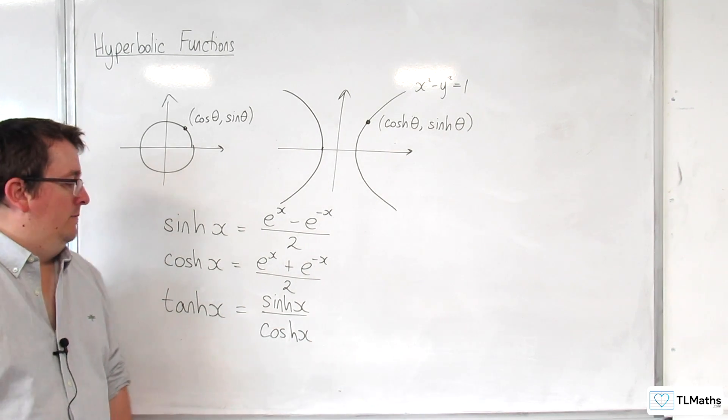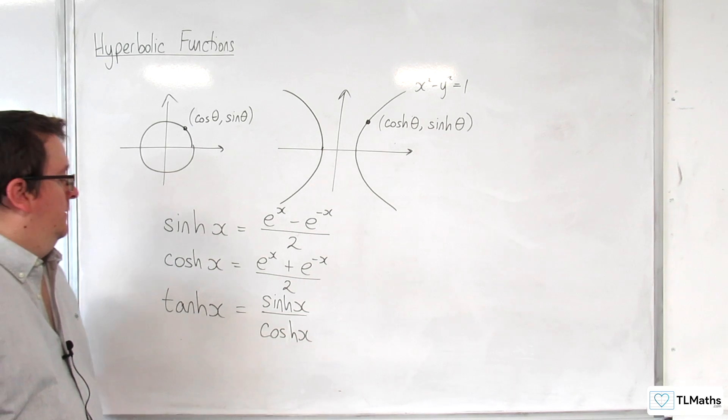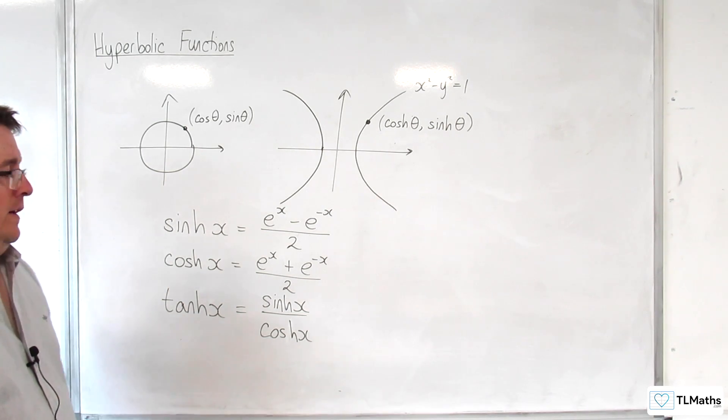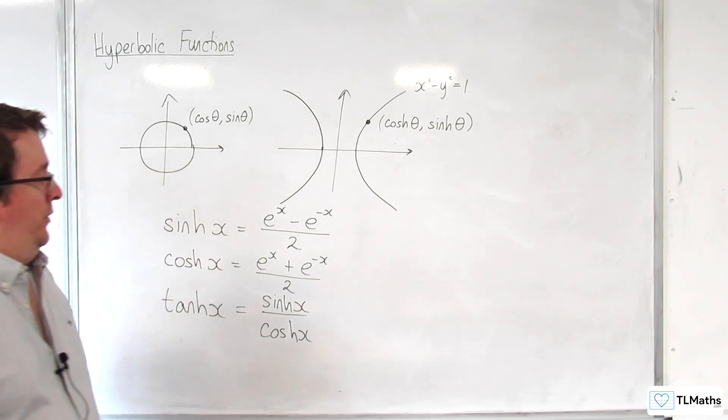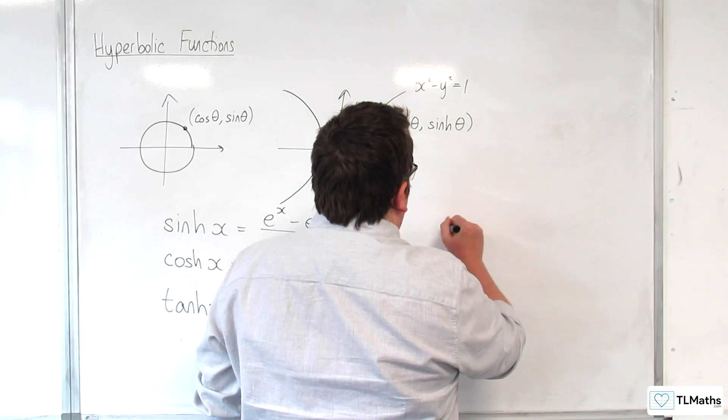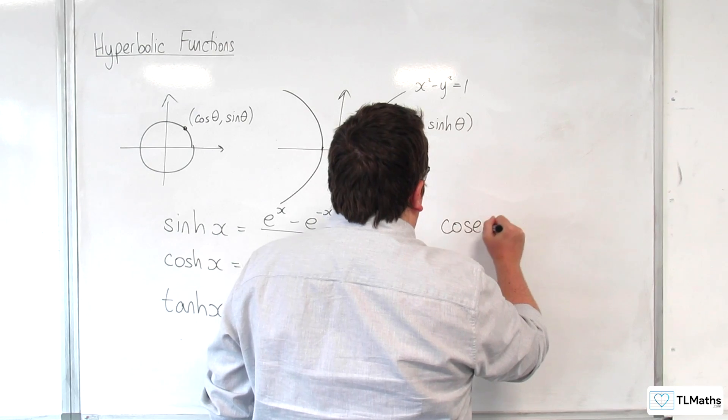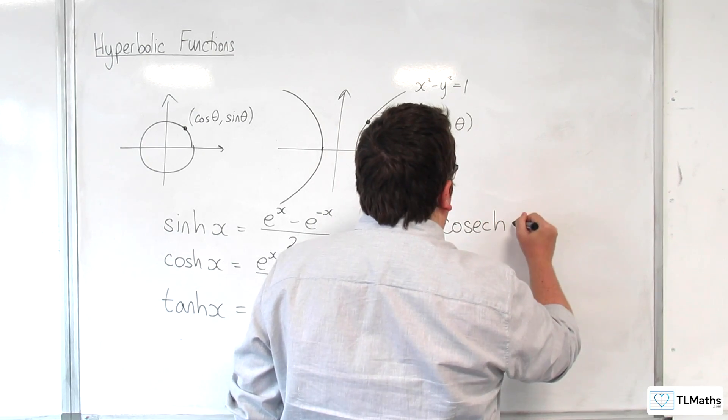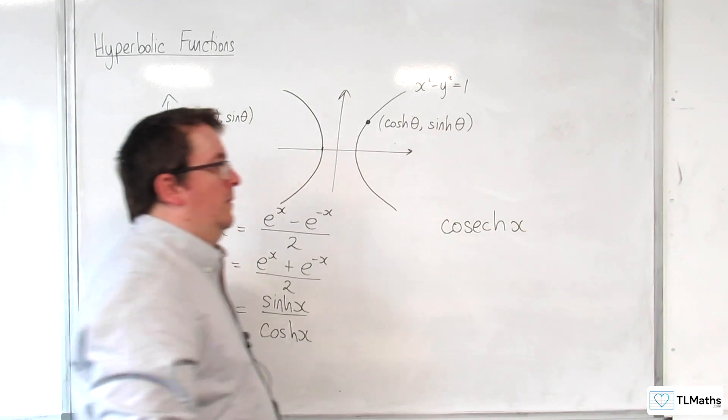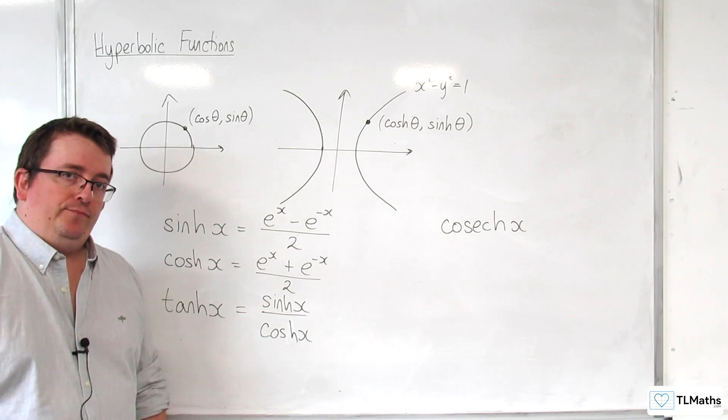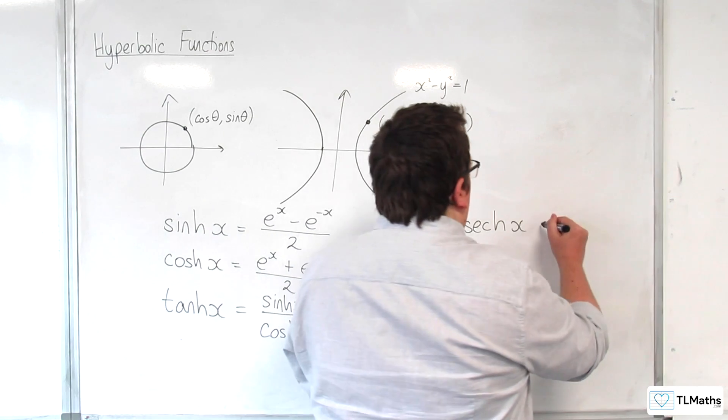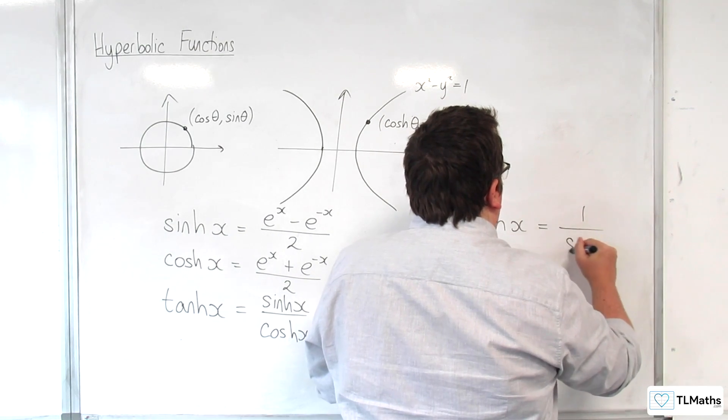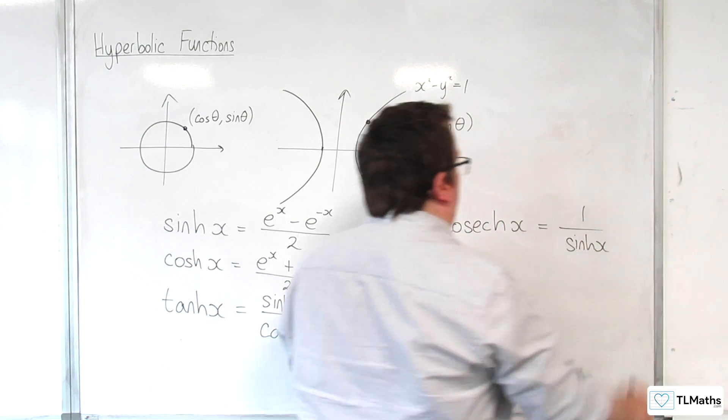So, then, you'd think, okay, well, if we've got those three functions, then how about cosech, as I pronounce it, cosech. So, that is 1 over sinh of x.